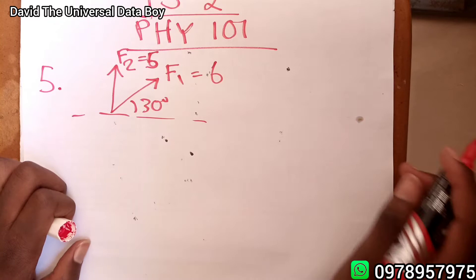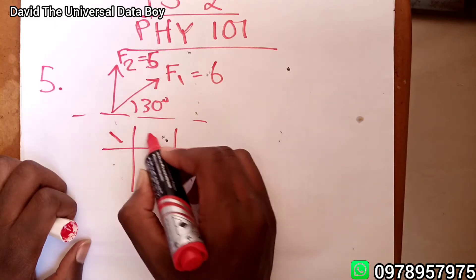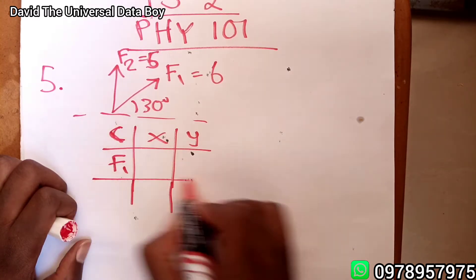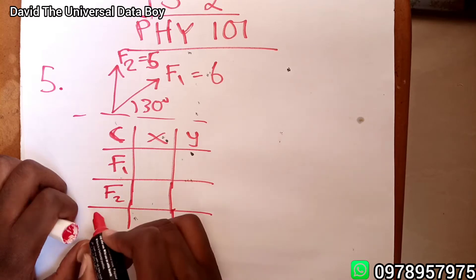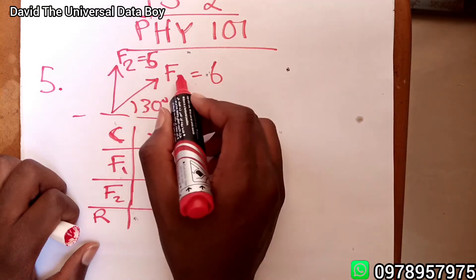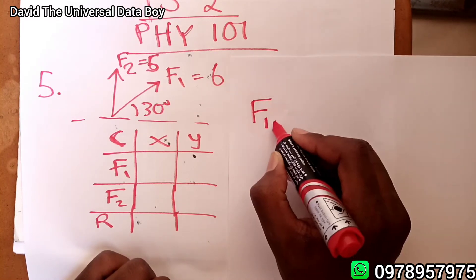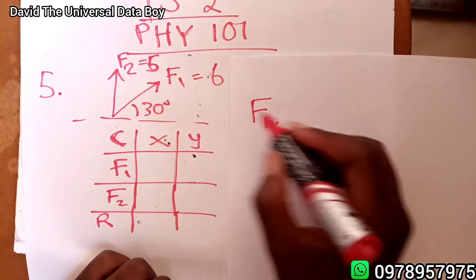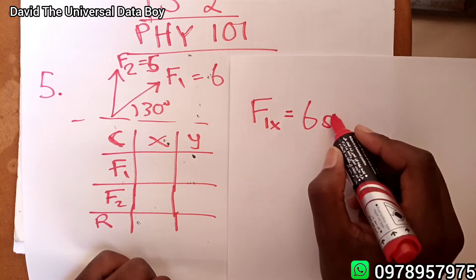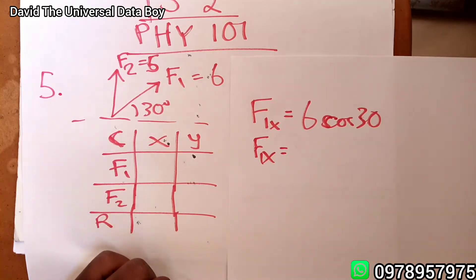We resolve into components. Setting up a table with x and y columns for F1 and F2, then we'll add them to find the resultant. For F1 in the x-direction, analyzing the diagram, F1x is given by 6 cosine 30.